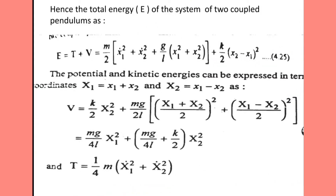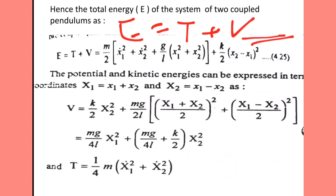Hence the total energy of the two pendulums, E, is denoted in classical mechanics as E = T + V. It is given by the equation: E = (m/2) * (X1_dot^2 + X2_dot^2) + (g/L) * (X1^2 + X2^2) + K/2 * (X2 - X1)^2. This is the resultant equation for the total energy of the system of two coupled pendulums.